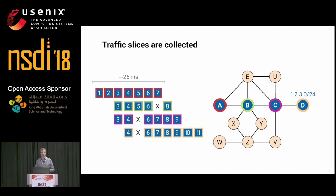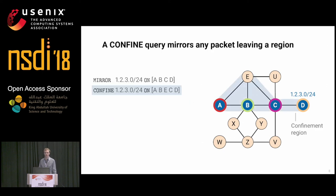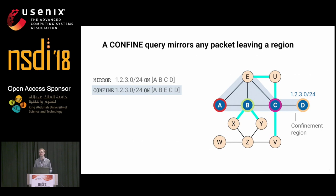For high-level analysis, we add a second construct called a confined query. A confined query is a requirement from the operator to get information about any single packet that would be exiting a confinement region. This is conceptually equal to mirroring on every single highlighted edge. If we see any traffic towards our customer network flowing outside the confinement region, please raise an alarm.